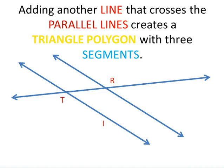Adding another line that crosses the parallel lines creates a triangle polygon with three segments. But that's another story.